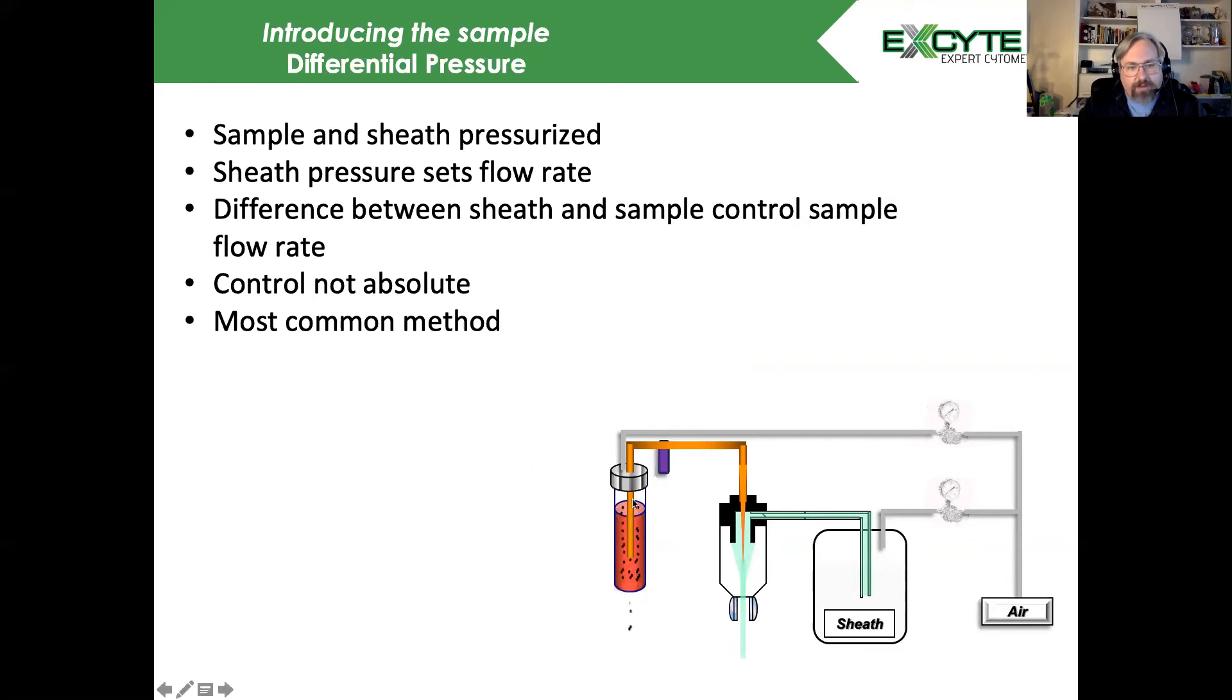When we add our sample to this tube, we've got to make sure we have a good seal here. We have this valve here that's going to let us pressurize this tube, and our cells are going to run through our flow cell contained in the center of the stream. This is one of the most common methods for moving cells through our fluidics pathway, but importantly, its control is not absolute.